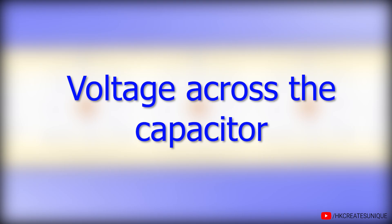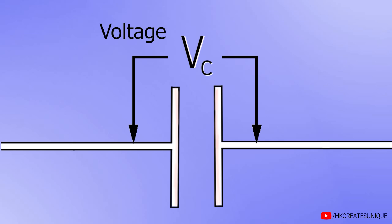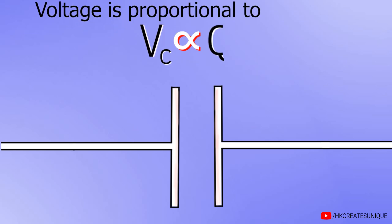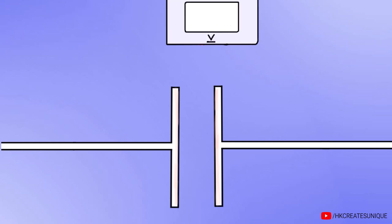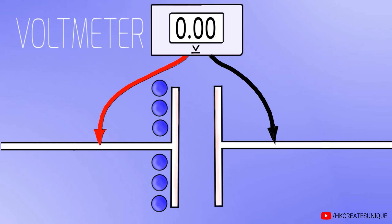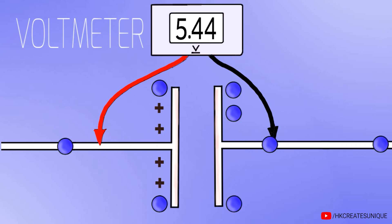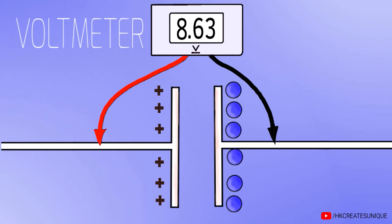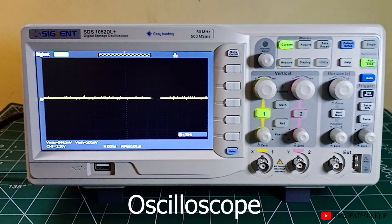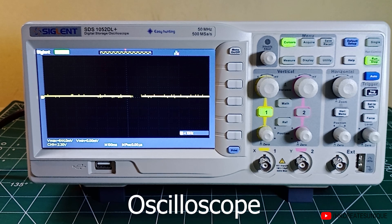Now what we are interested in is the voltage across the capacitor. The voltage across a capacitor is directly proportional to the charge that each plate is holding. At the beginning there is no charge, and hence the voltage across it is 0 volts, as can be seen on the voltmeter. But voltage starts rising as electrons start accumulating. After some time, voltage across the capacitor reaches the supplied voltage, which is 9 volts in our case. This increase in voltage can be hard to visualize using a voltmeter, but using an oscilloscope like the one I have here, we can visualize voltage over time.